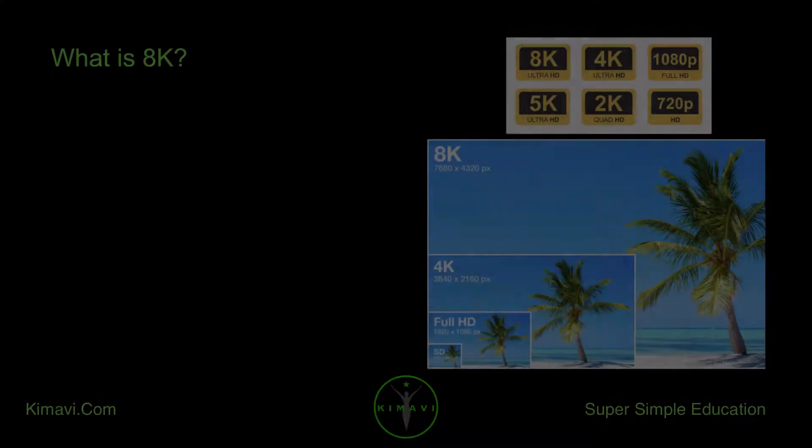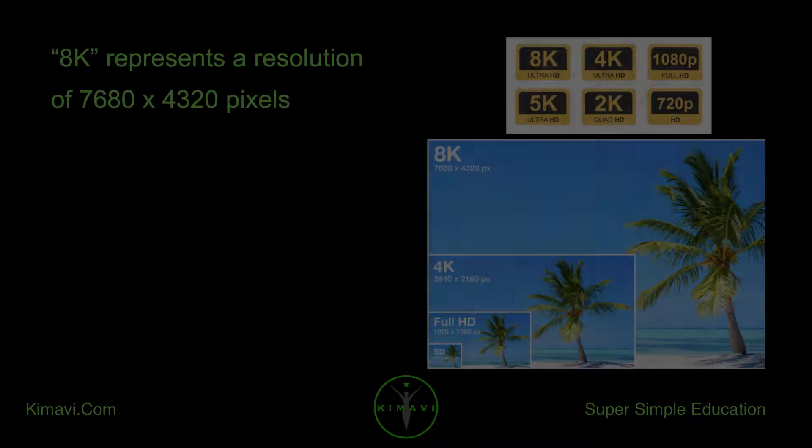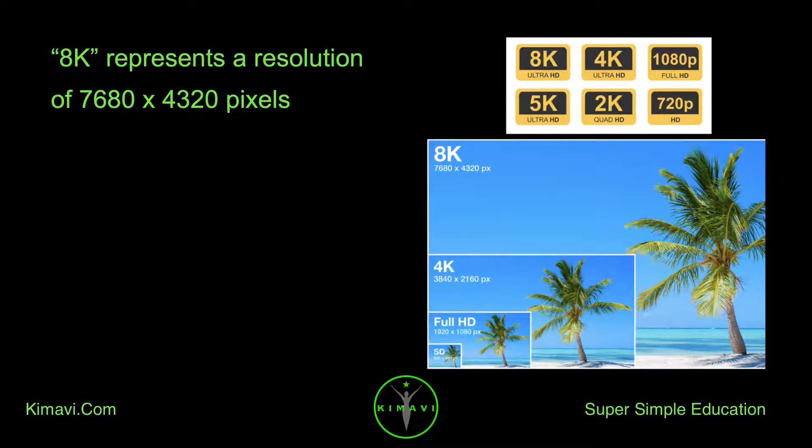What is 8K? 8K represents a resolution of 7680x4320 pixels.